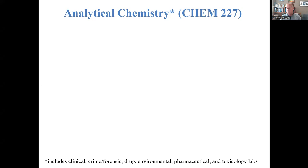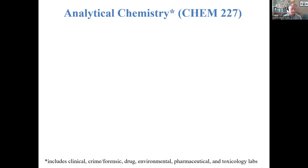Analytical chemistry here at Penn State is known as Chem 227. We tend to use numbers rather than actual course titles. Analytical chemistry is really an overarching umbrella, and under that umbrella we have a number of different types of industry and academia positions. This would be anybody who works in a clinical laboratory environment, crime or forensic lab, drug lab, environmental, pharmaceutical, or toxicology labs — traditional industry areas where analytical chemistry is important and where analytical chemists find employment.